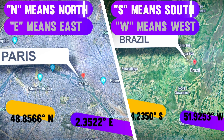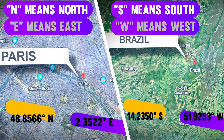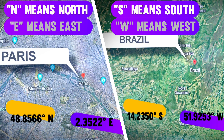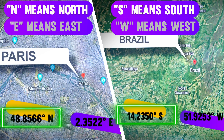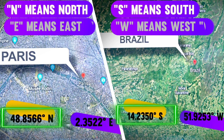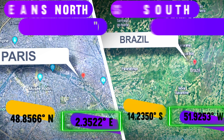Here, S means south, N means north, E means east, and W means west. Latitude is written before longitude. Latitude is written with a number followed by either north or south depending on whether it is located north or south of the equator. Longitude is written with a number followed by either east or west depending on whether it is located east or west of the prime meridian.